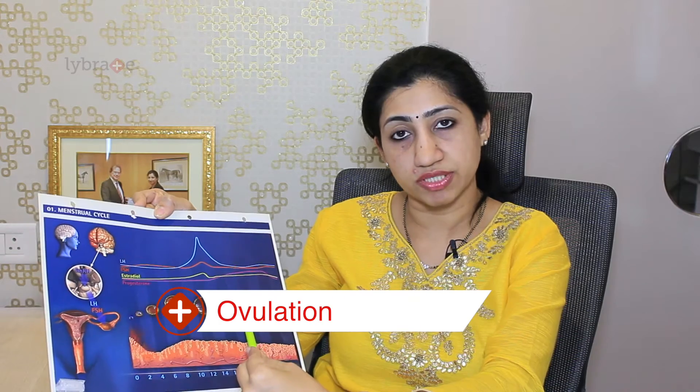If ovulation happens correctly on the 14th day of her cycle, and over the next 14 days there has been no pregnancy, then a girl will resume her menses. If this happens regularly, a girl gets a regular cycle of 28 to 30 days. When a girl has irregular cycles, the ovulation is not happening correctly on time — these are known as ovulatory disorders.